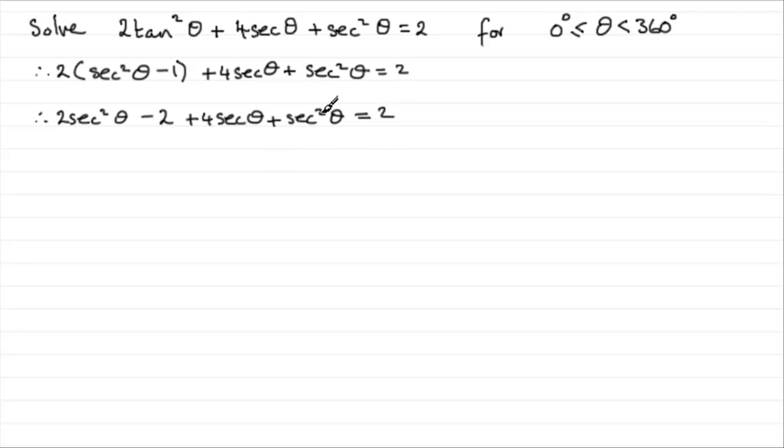If we group together the sec²θ terms we're going to have 3sec²θ and then we'll take the secθ term 4secθ. This is a quadratic in secθ so we need to make it equal 0. So we'll subtract 2 from both sides. So we've got -2 minus another 2 is -4 and that equals 0.